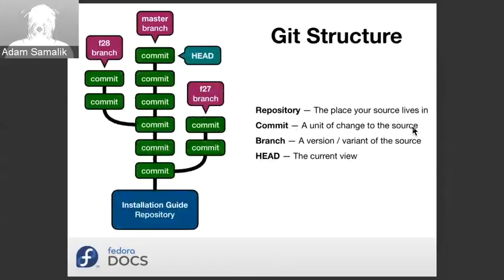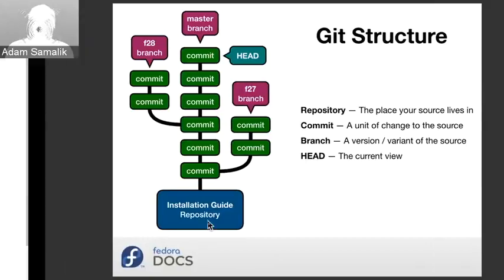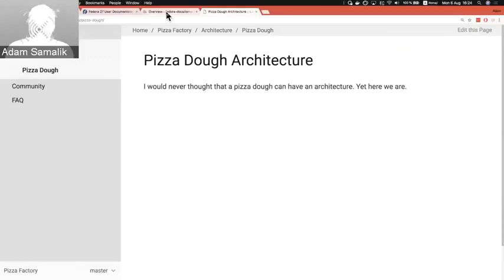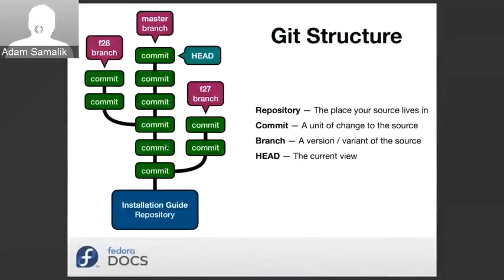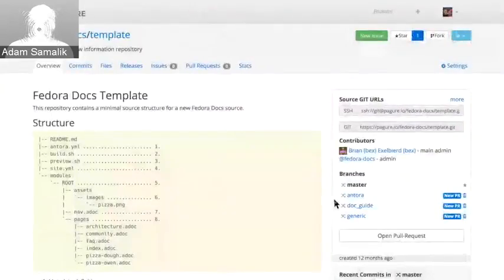Git structure. So if you have a Git repo, there are four words we need to learn: repository (or repo), commit, branch, and head. A repo is the place that holds the sources — for example, on Pagure. We use Fedora Pagure. Then we have commits, which are basically the unit of change to the source. So you have some source, and if you change it in some way, you create a new commit which tracks the change and also has a name. I can show you in the web UI — recent commits are here, there were only two: an initial commit, and then switching to Antora last week.